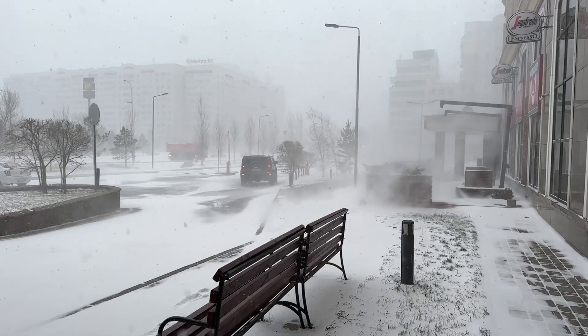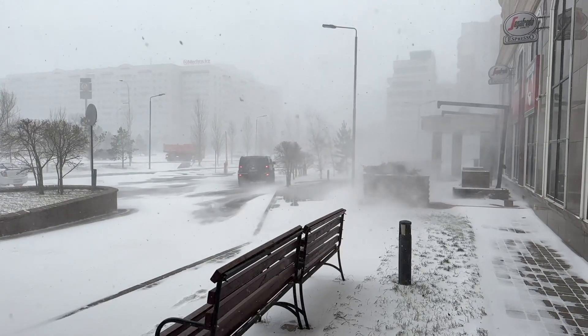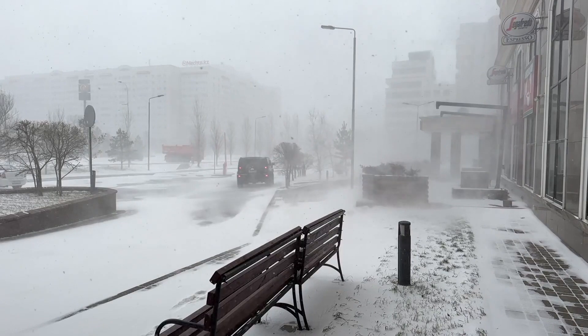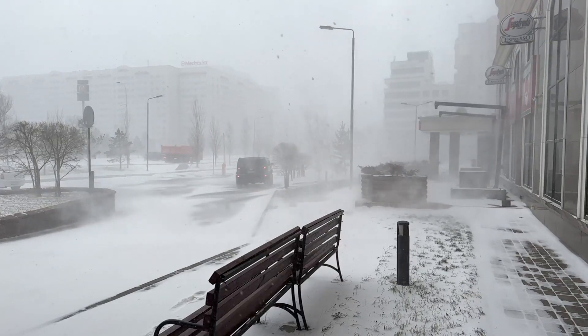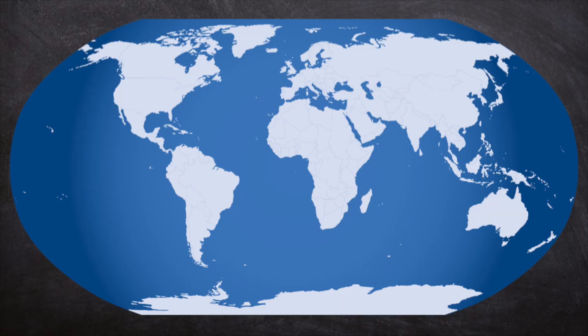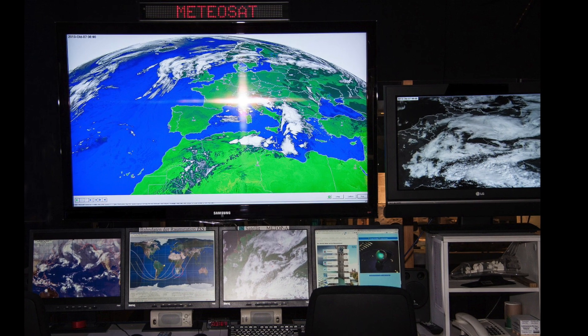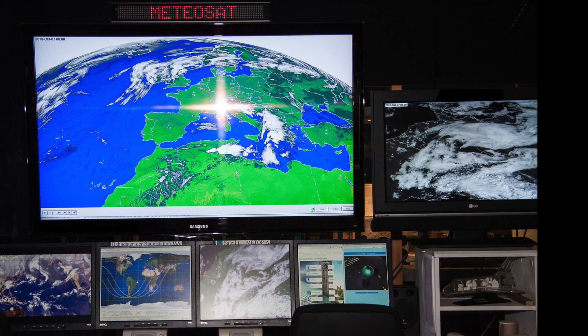Some blizzards happen when snow already on the ground is blown around by the wind — this type is called a ground blizzard. Blizzards mostly happen in places near the Arctic, like Asia, Europe, Canada, and even the United States. They usually happen in winter when temperatures are colder.